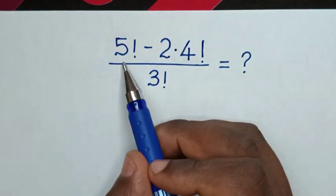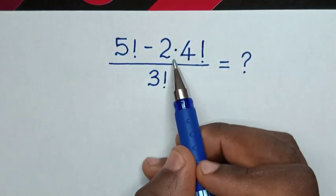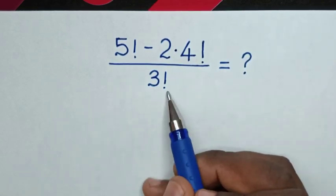Hello! How to solve 5 factorial minus 2 times 4 factorial over 3 factorial?